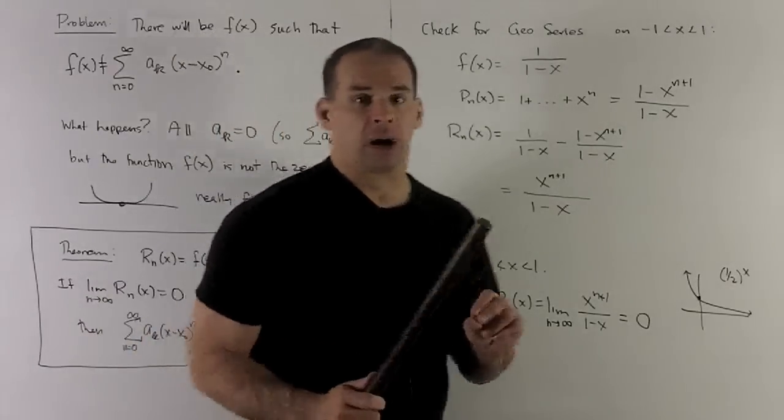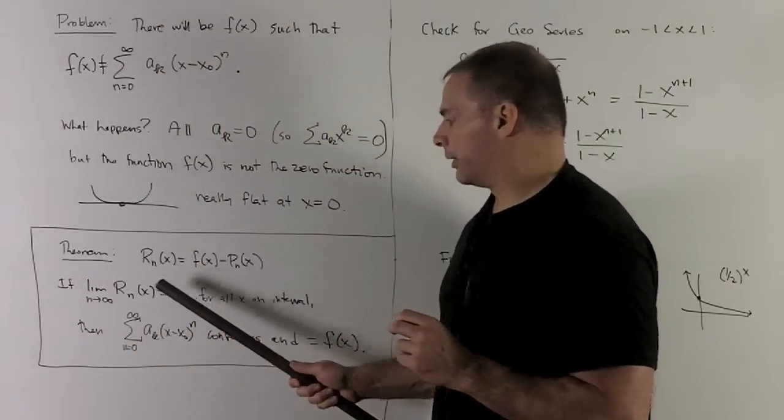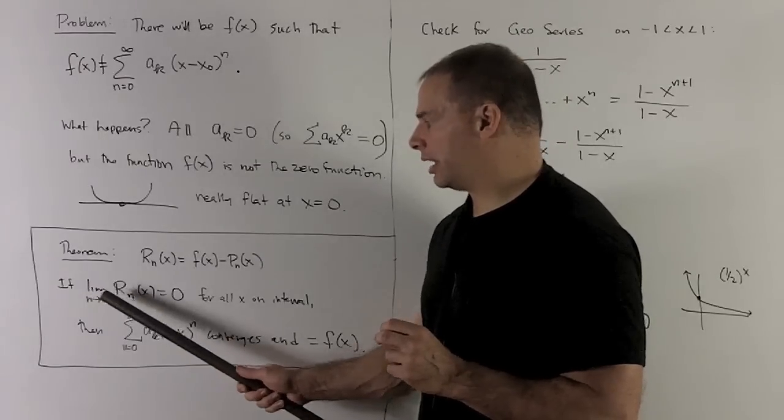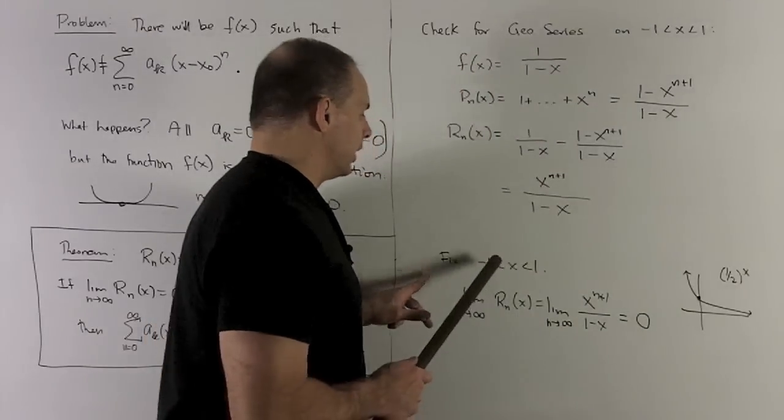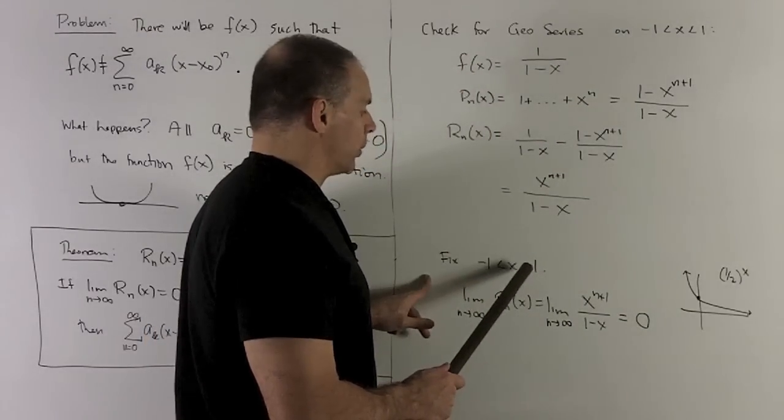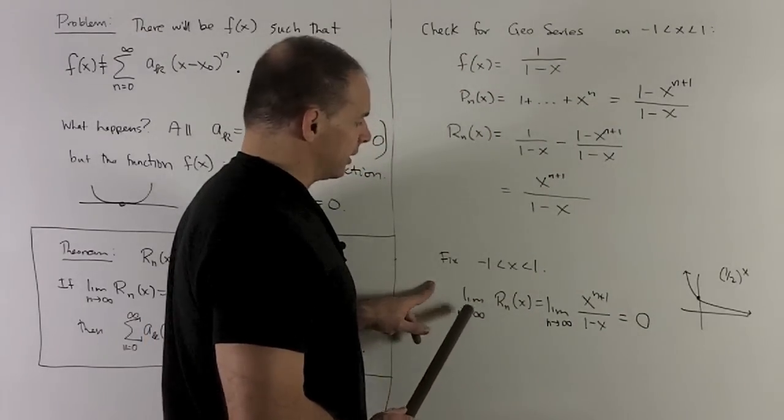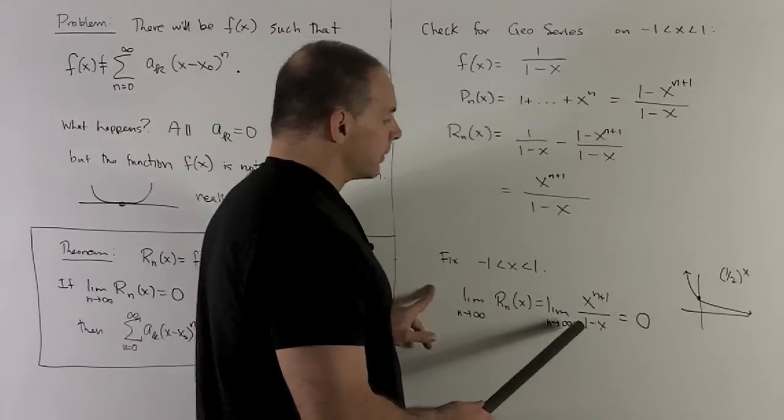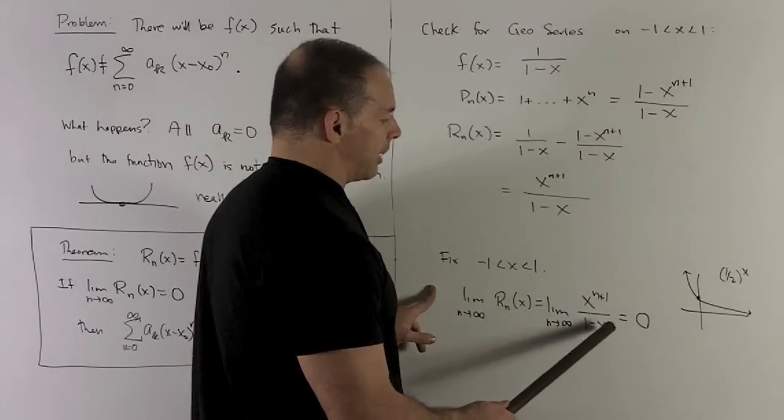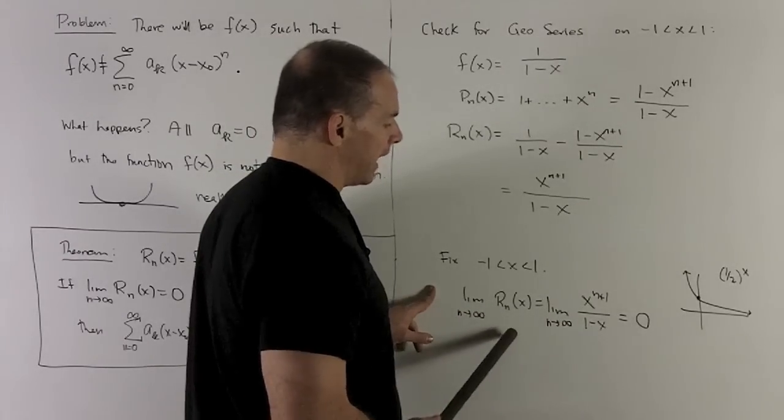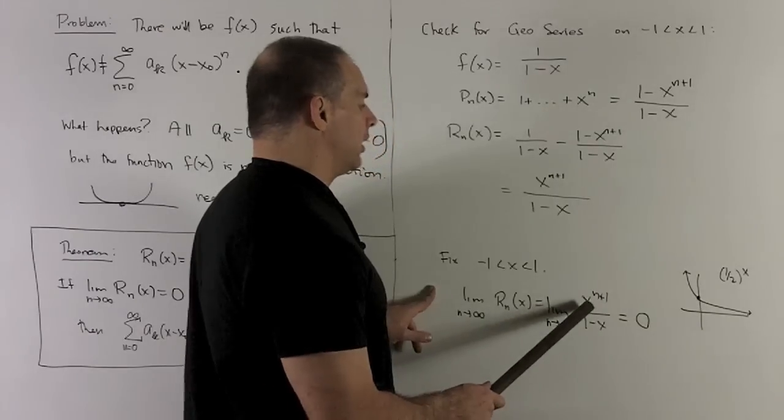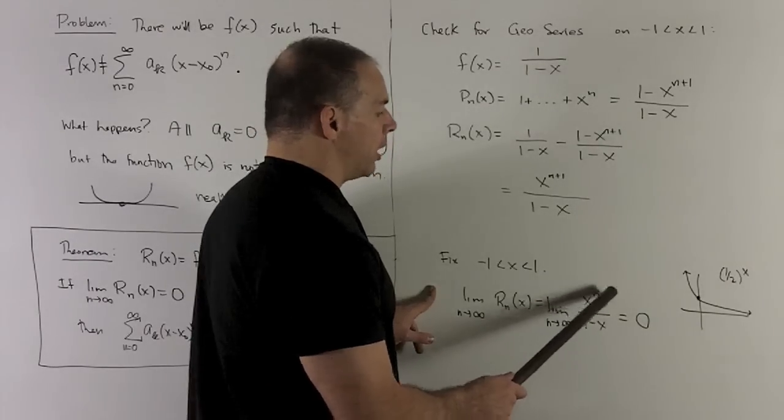To use our theorem, what am I going to do? I'm going to fix an x, and then we're going to take the limit as n goes off to infinity. So here x is going to be fixed between minus one and one. Then we're going to take the limit, so what's going to happen? Here I have one minus x in the bottom. That's just a constant, so we can pull that out of the limit.